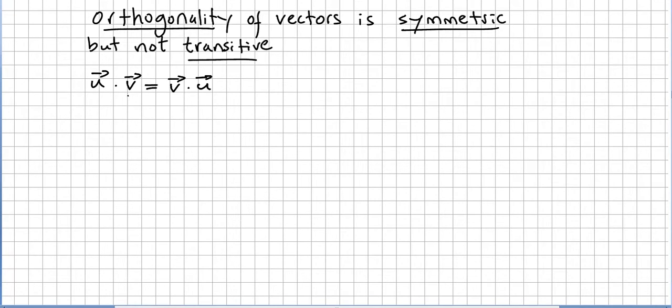At the end of the day, showing that the orthogonality of vectors is symmetric is to show that u·v is the same as v·u. Let u = (u1, u2, ..., un) and v = (v1, v2, ..., vn).